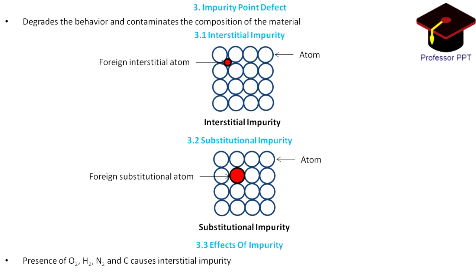The effects of impurity: Presence of oxygen, hydrogen, nitrogen and carbon is highly significant and they are primarily interstitial impurity. Impurity reduces electrical conductivity, chemical resistivity and mechanical formability.